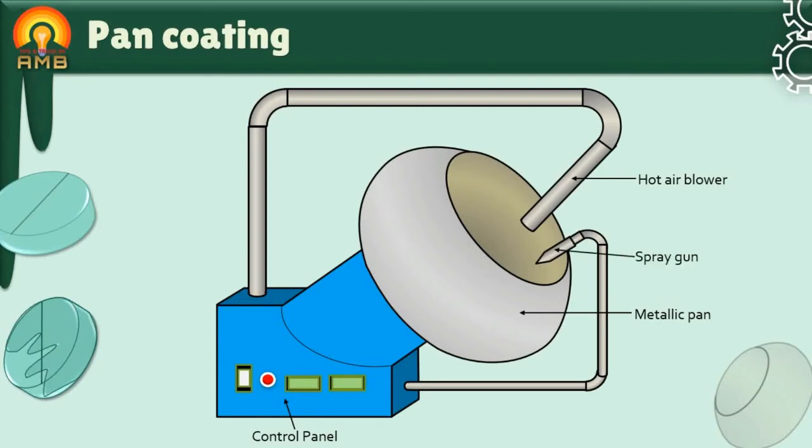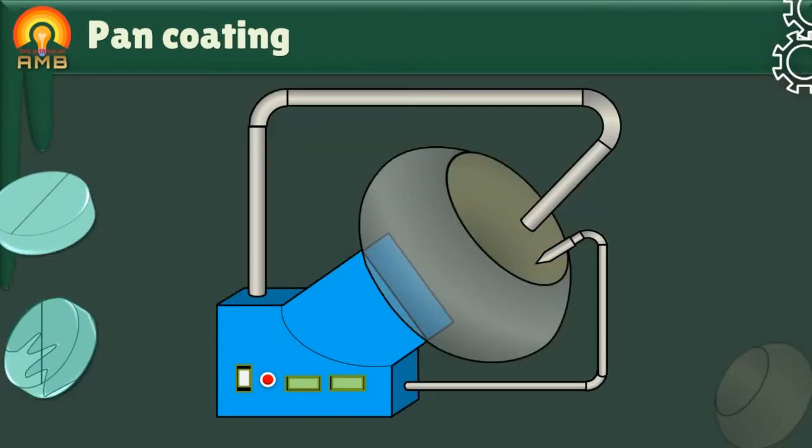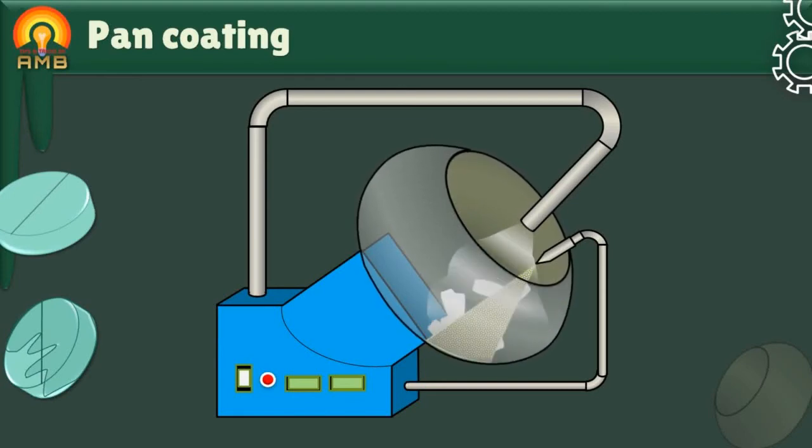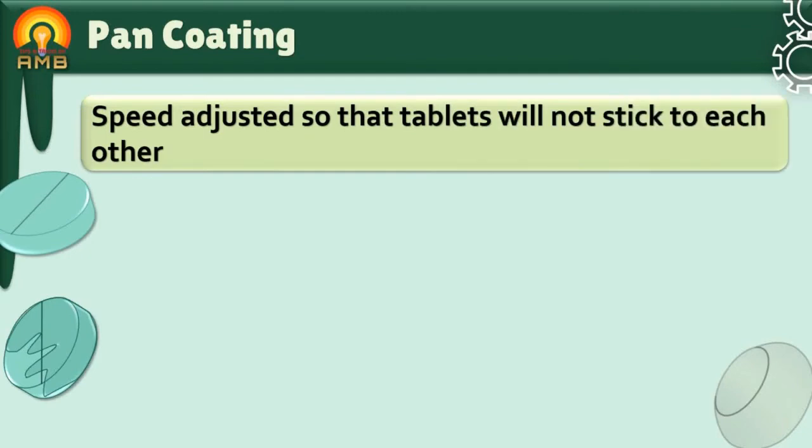The tablets to be coated are placed in the pan and rotated. Hot air is blown in and several layers of coating solution are sprayed on the rotating tablets. Because of hot air, solvent gets evaporated, leaving a layer on core tablets. The speed of the pan is adjusted such that the tablets remain separated from each other in the pan.